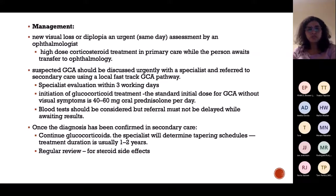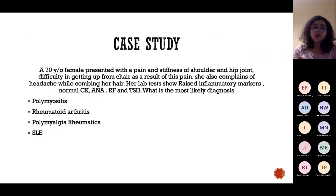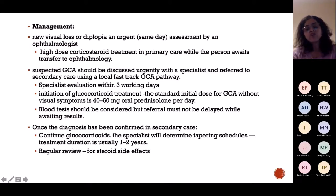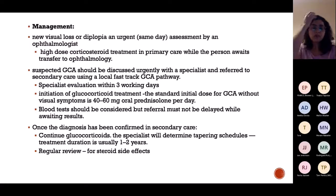Management follows a fast-track system: patient comes in, give a high dose of steroids in primary care itself. After that, send for ophthalmology referral, and specialist rheumatology evaluation within three days. The usual dose is 40–60 mg of prednisolone. Once diagnosis is confirmed, steroids are continued for 18–24 months. Side effects of long-term steroids include osteoporosis, cataracts, raised lipid levels, hyperglycaemia, and depression. Psychological support including CBT or follow-up is also important.